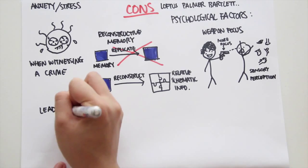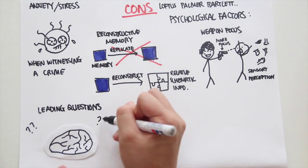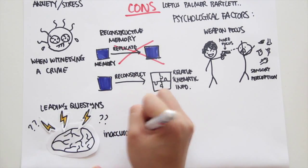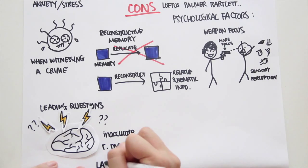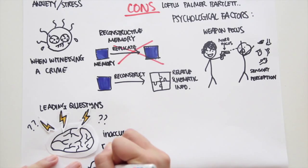Leading questions. Memory can be easily distorted by questioning techniques. Information acquired after the event can merge with original memory causing inaccurate recall of reconstructive memory. This puts language as a way of knowing at fault.